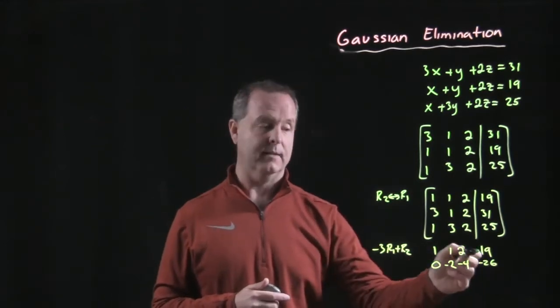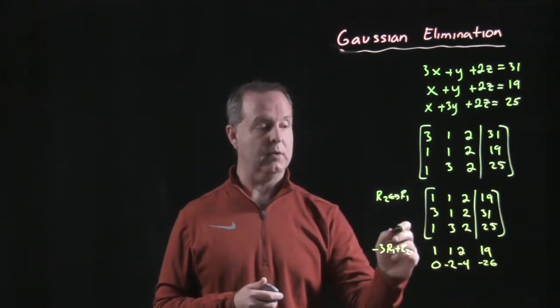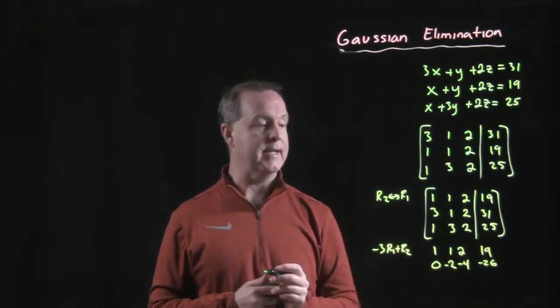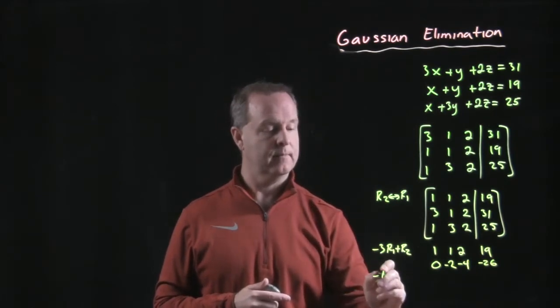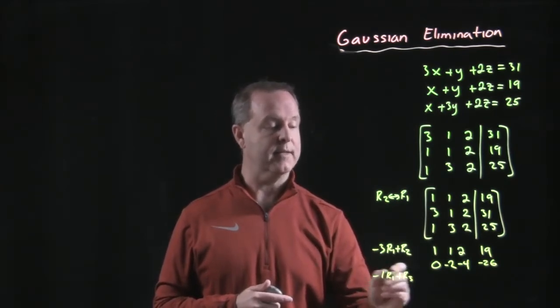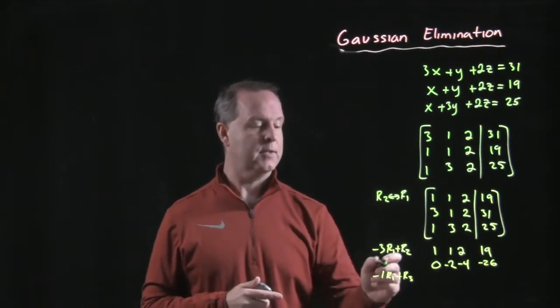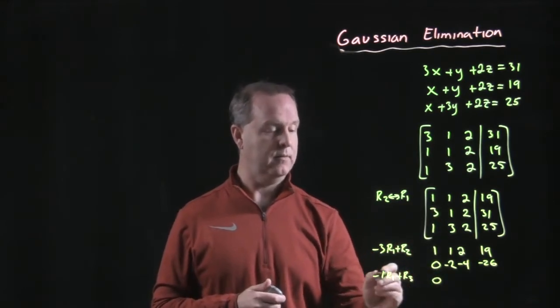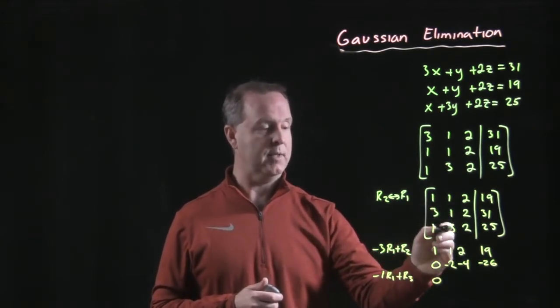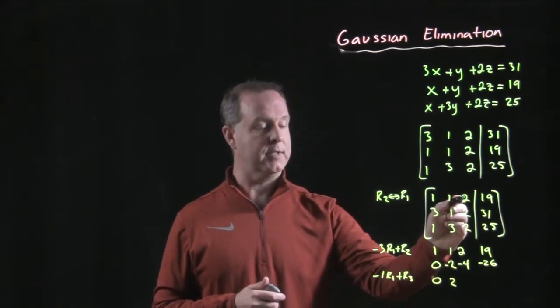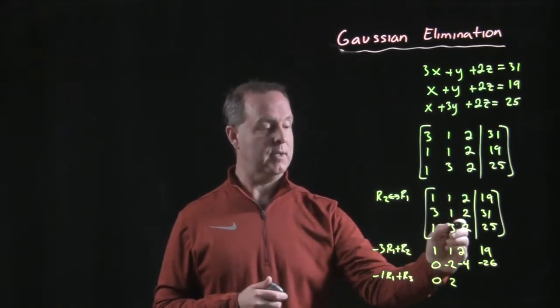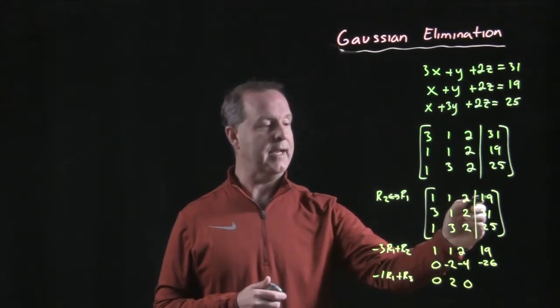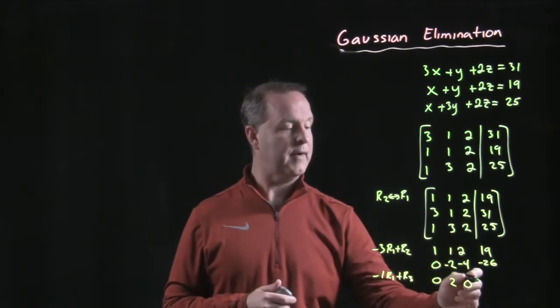Let's go ahead and get a zero in that next spot as well. So let's take row one, multiply row one by negative one and add it to row three this time. Negative one times row one. Negative one times one is negative one plus one, zero. Negative one plus one makes two. Negative one times two is negative two plus two makes zero. Negative one times 19 is negative 19. Negative 19 plus 25 provides a six.